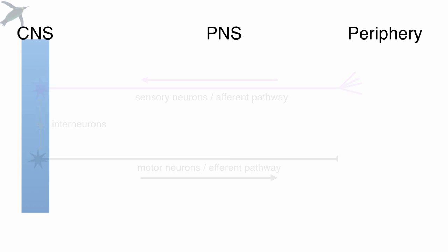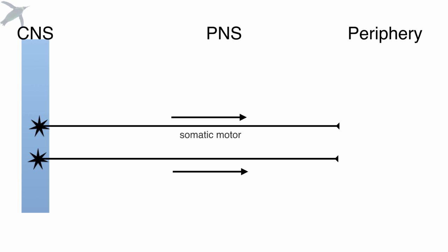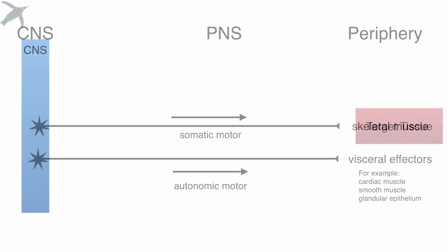So there are two different categories of efferent pathways. We have the somatic motor neurons, and those innervate skeletal muscle — the muscle that you voluntarily move. The rest of your motor pathways are autonomic motor, and those innervate visceral effectors. And these are the ones that give students a really hard time, and those are the ones we're going to be focusing on.